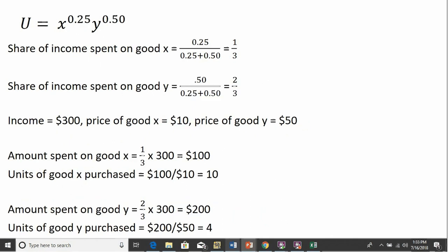Let's do one more example. Here we have a utility function where x is raised to 0.25 and y is raised to 0.5. So again, setting up the formula to get the share of income spent on good x, which was a divided by a plus b, we see this consumer will spend one-third of his or her income on good x and two-thirds of his or her income on good y.